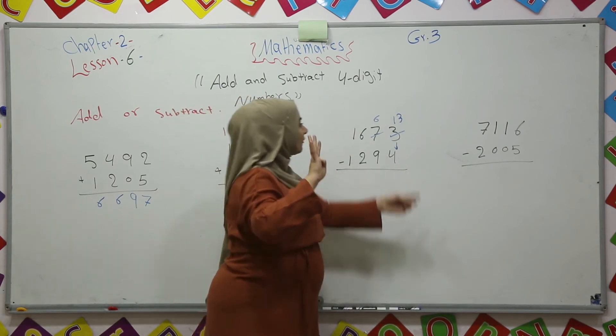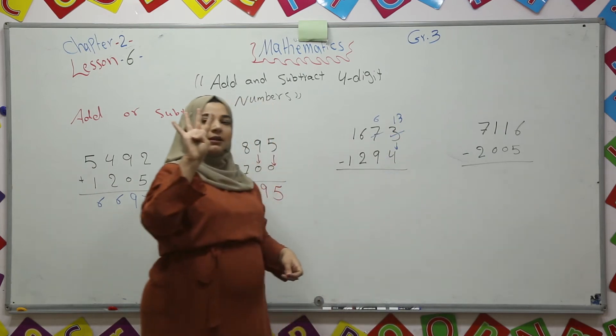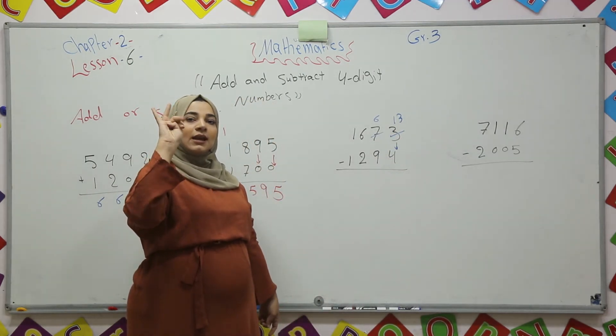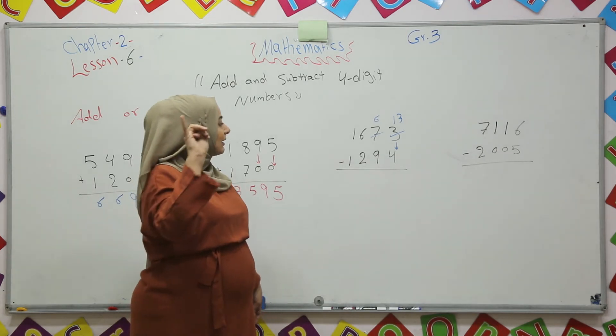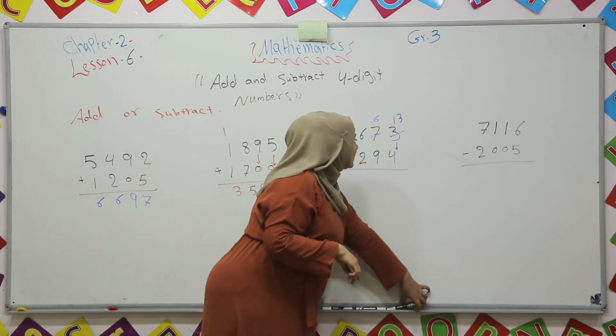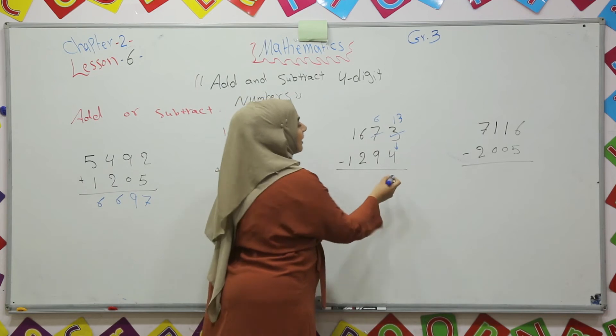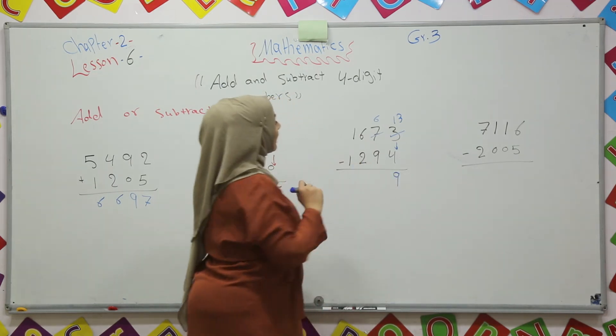Thirteen minus four. Count back from thirteen. Four numbers. Thirteen, twelve, eleven, ten, nine. So it is nine. Thirteen minus four is nine.